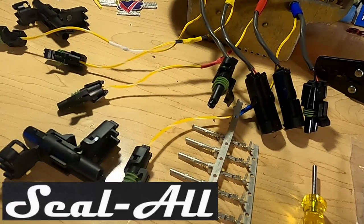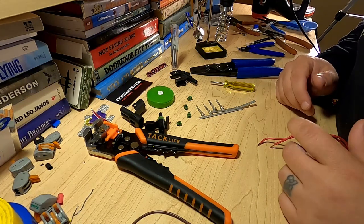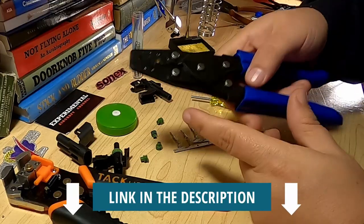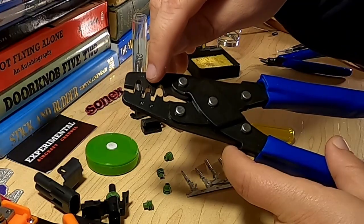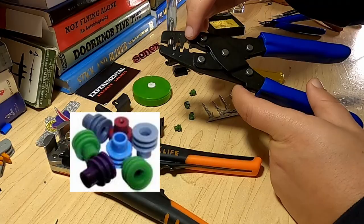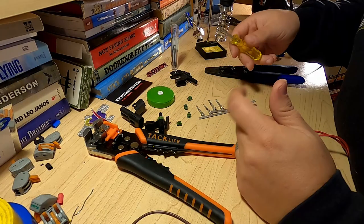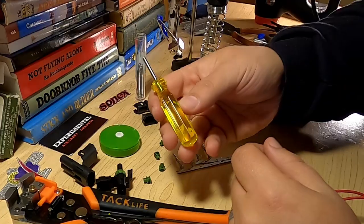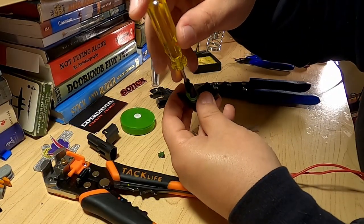In this case, they are the Seal-All brand connector. Now these are real simple to put together, but it does help if you have some of the special tools to do this job. This is the specific crimper sold by Seal-All. This both crimps the terminal to the wire and to the silicone seal. If you make a mistake or something needs to be changed, there's this pin removal tool. You insert it in the end and you can push the terminal out.